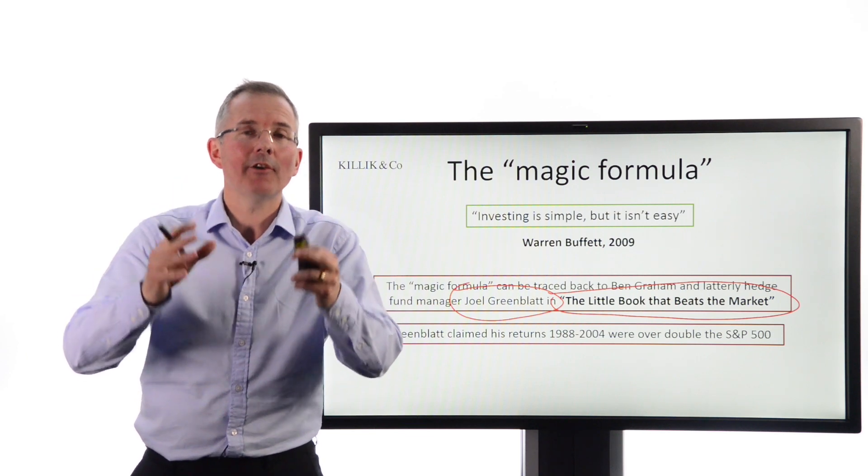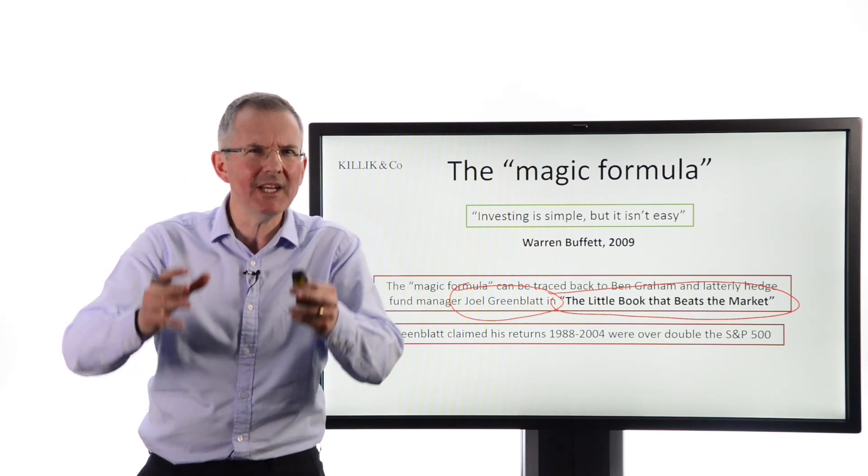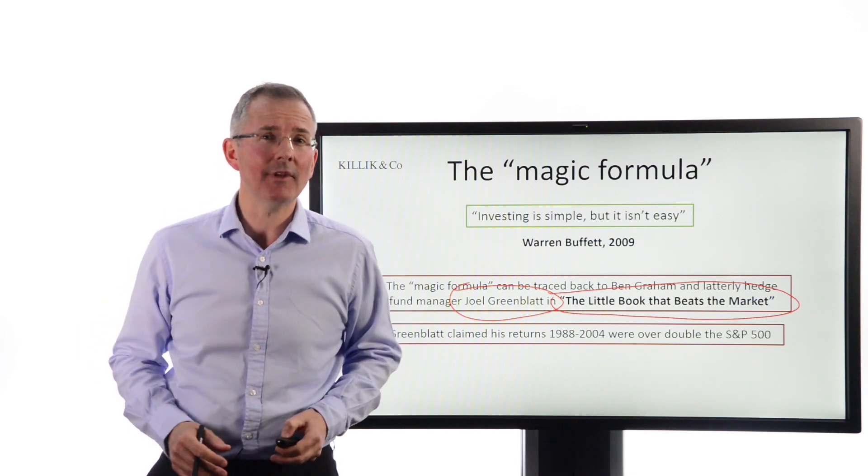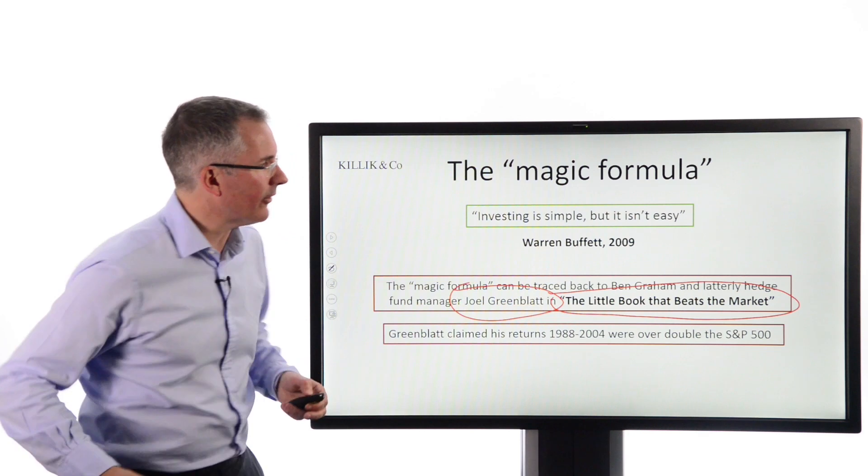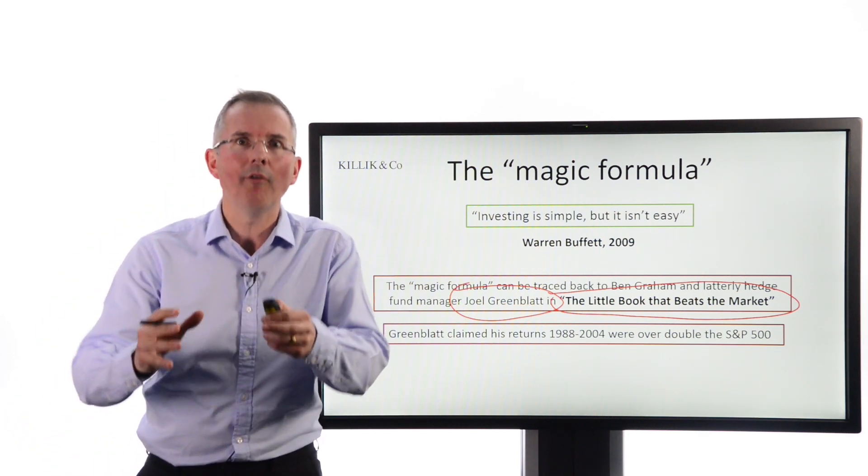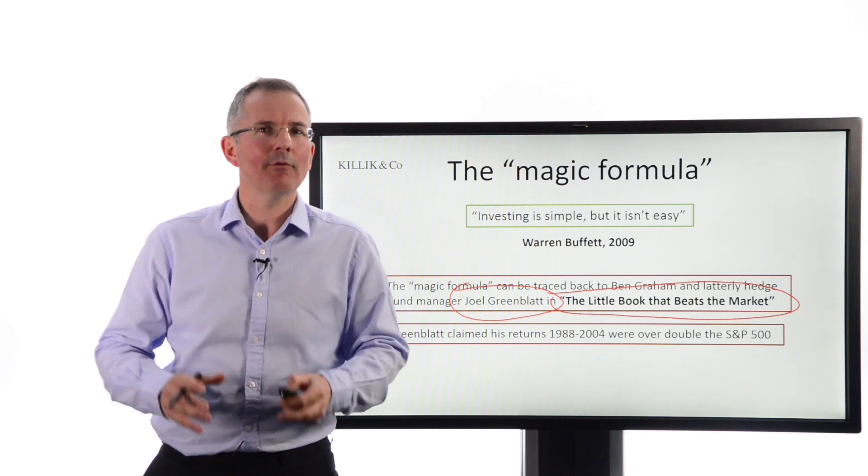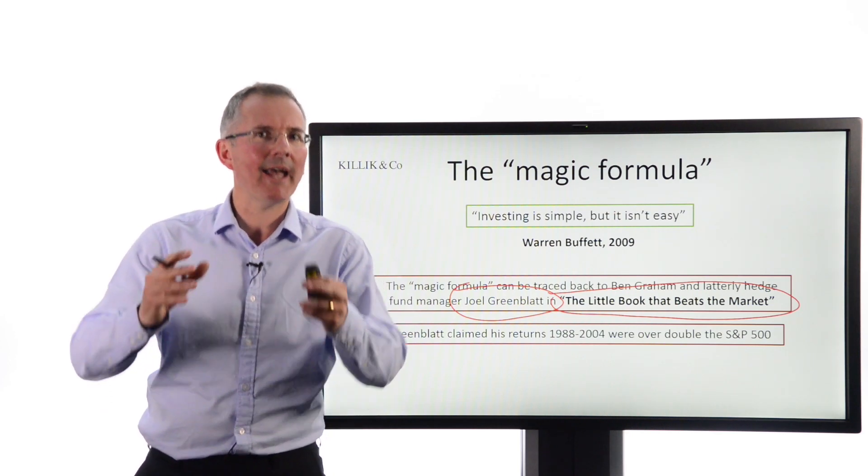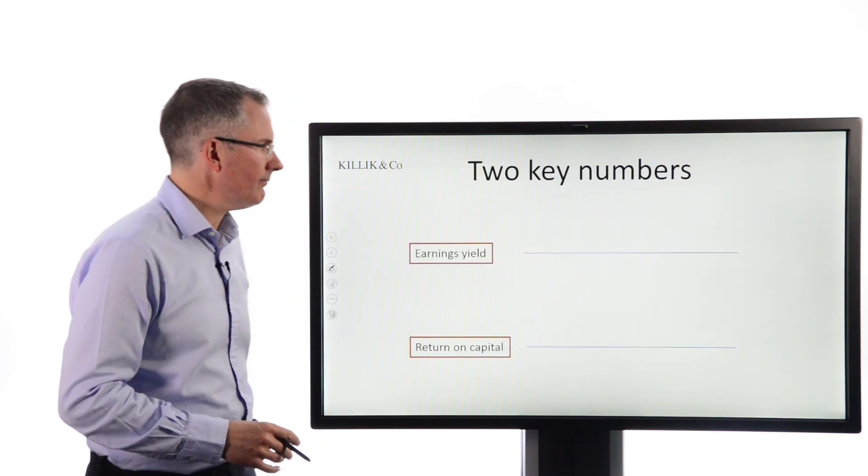So that sounds like a formula that's worth going for. And it is indeed very simple on the surface. But the question is, could you rely on it? Could you really distill investing to just effectively two numbers? Now, do recommend that you read the book. It's a great analysis of some of the value investing principles. But I'm going to conclude that relying on one magic formula may not, in fact, be the obvious solution that it first appears.